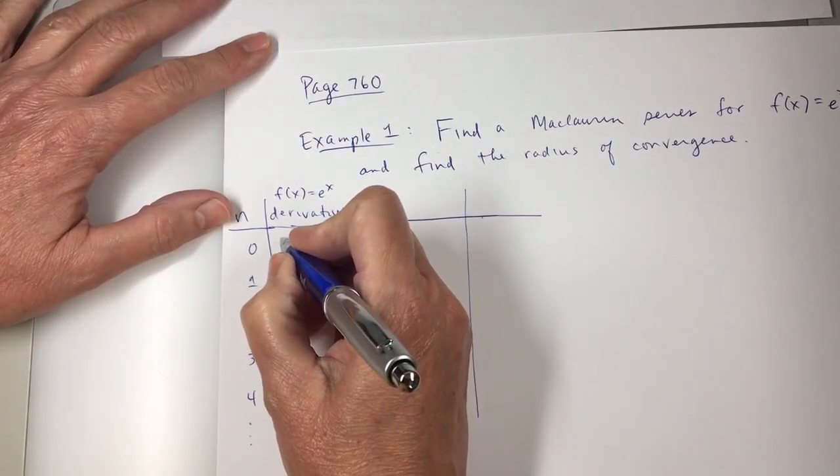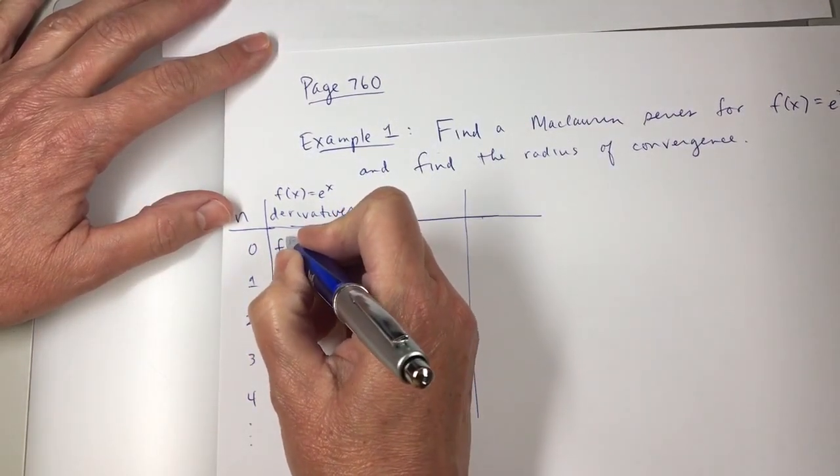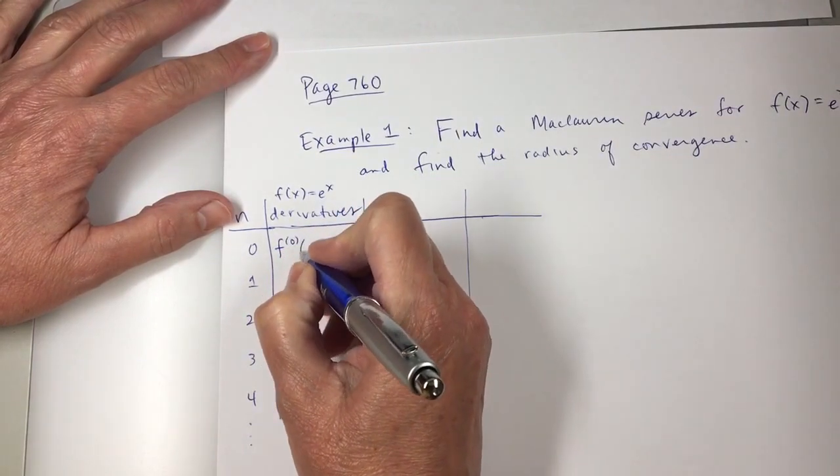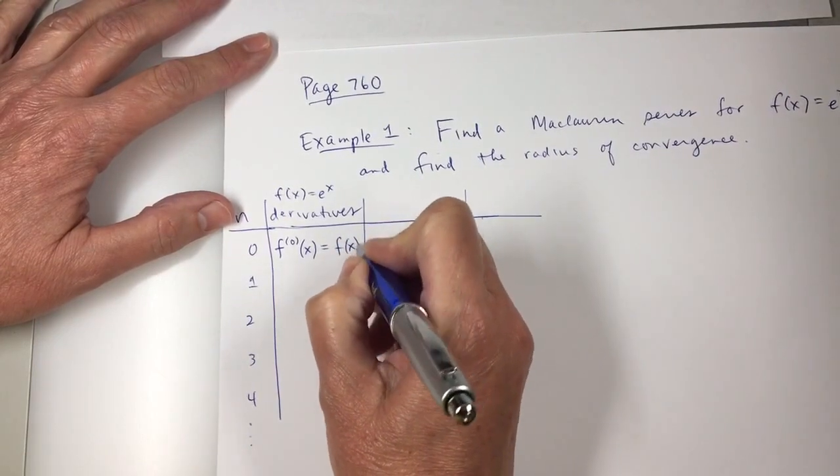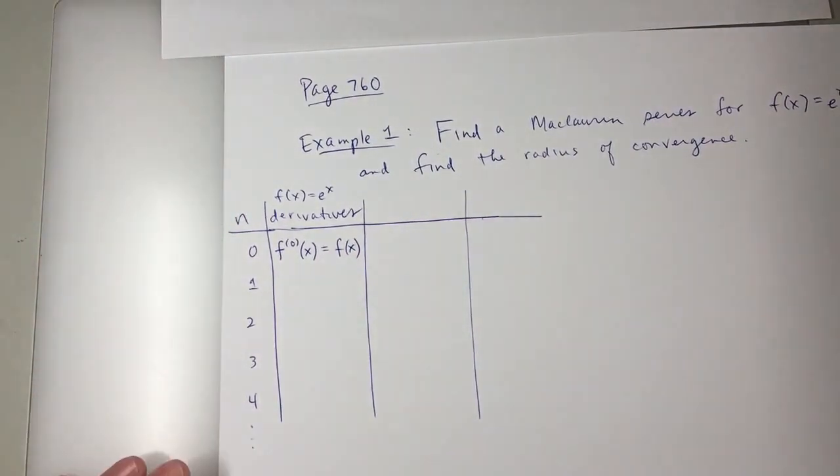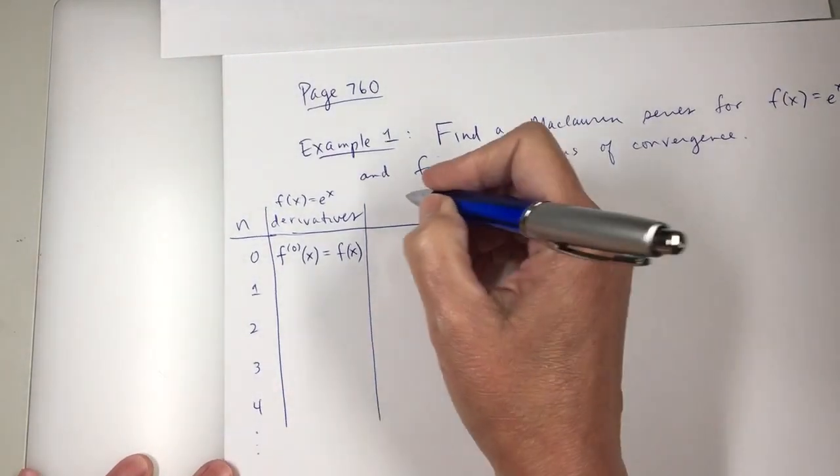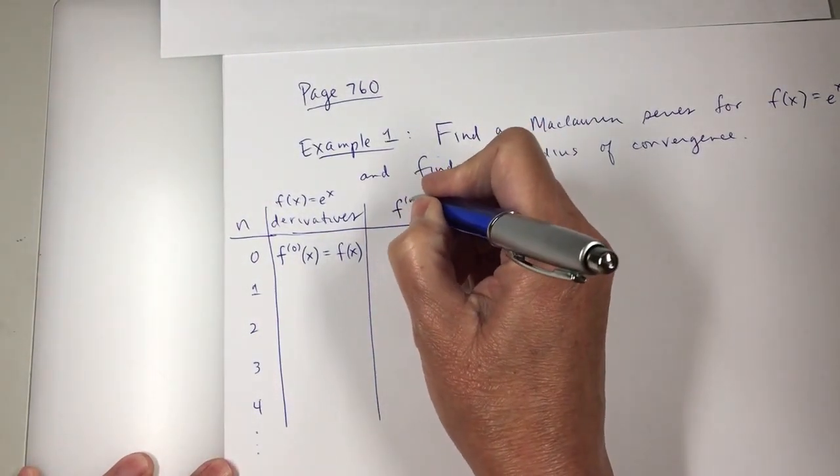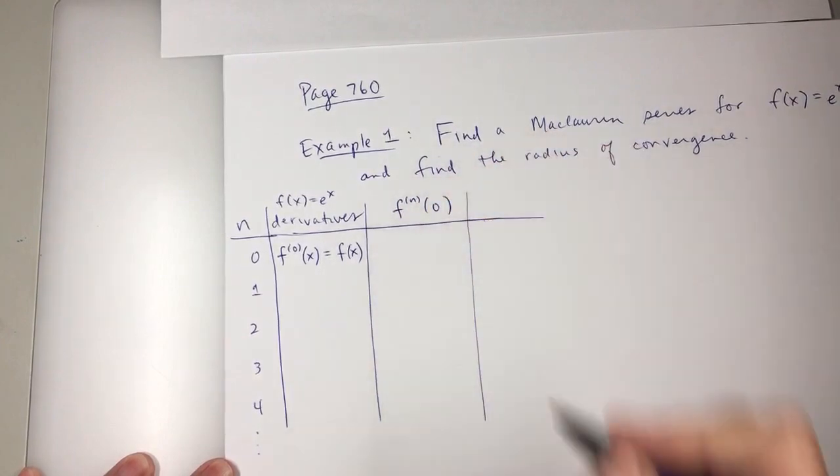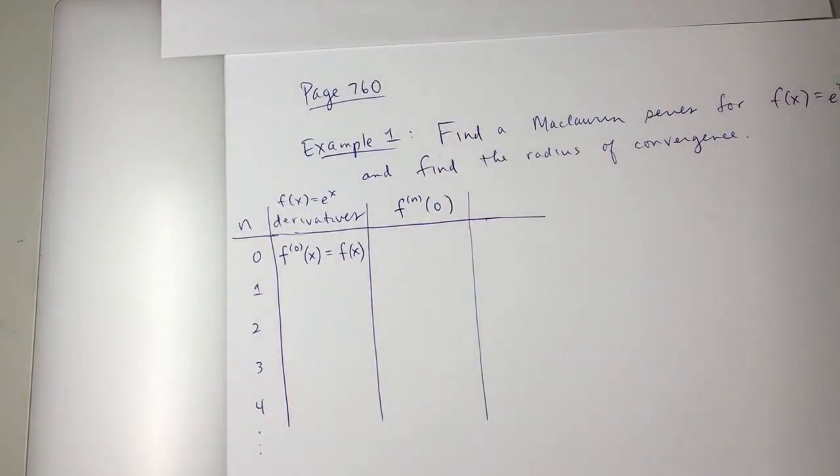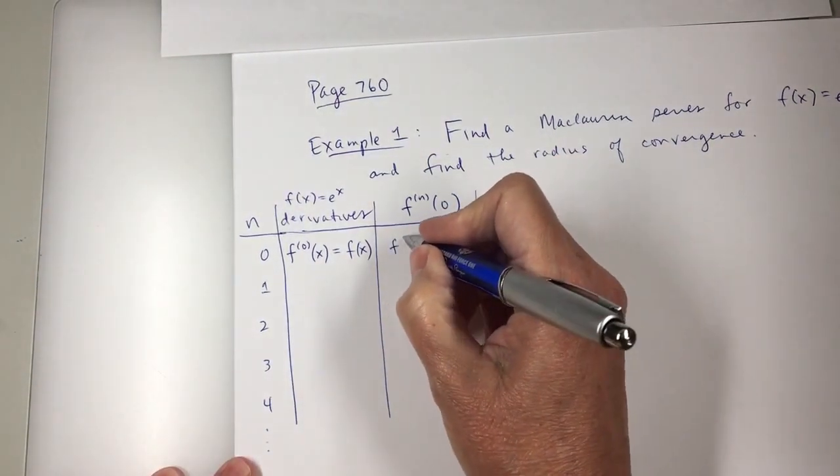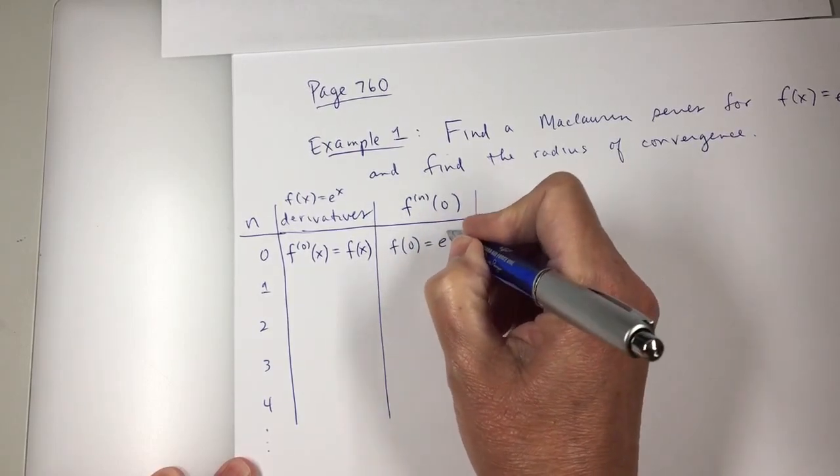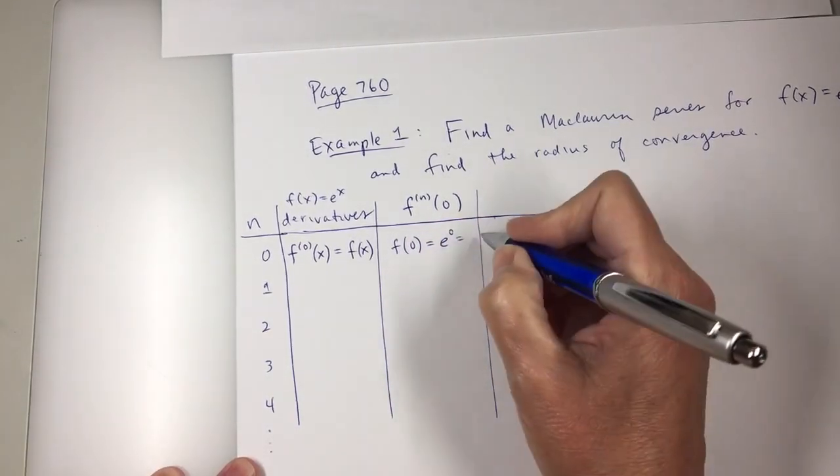The zeroth derivative is just the function itself, f(x). So the zeroth derivative is e to the x. Then I need to know the zeroth derivative at zero. So the zeroth derivative is the function e to the x. What's e to the zero? That is 1.